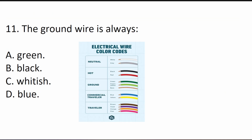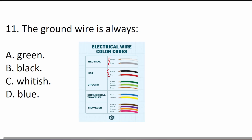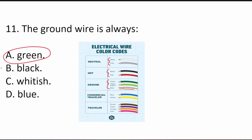Question 11 asks: the ground wire is always what color? Neutral wires are always white or gray. Hot wires are always black or red. Ground wires are always green, greenish-yellow, or bare copper. So the ground wire is almost always A, green.